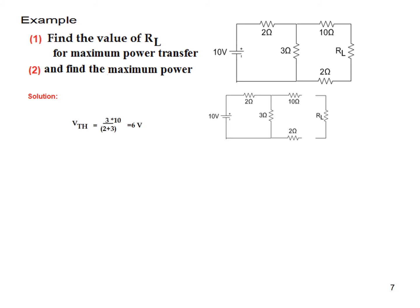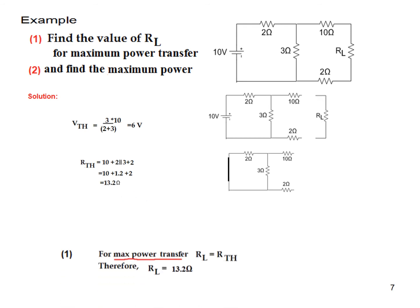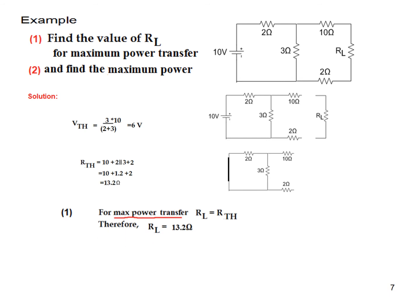To find R_Thevenin, we short-circuit the voltage source. The 2-ohm and 3-ohm resistors are now in parallel, and that combination is in series with the 10-ohm and 2-ohm resistors. So R_Thevenin = 10 + (2 ∥ 3) + 2 = 13.2 ohms. For maximum power transfer, R_L must equal R_Thevenin, so R_L = 13.2 ohms.